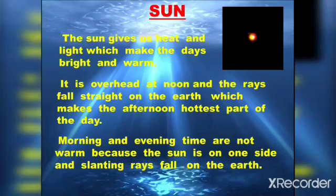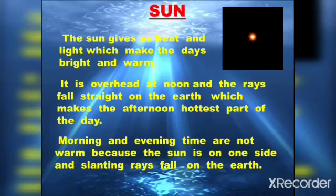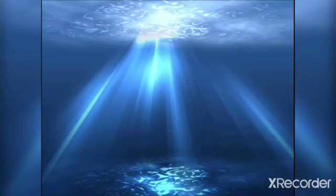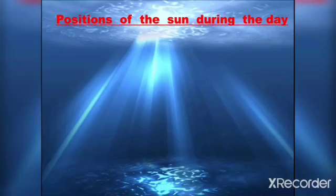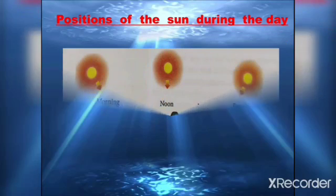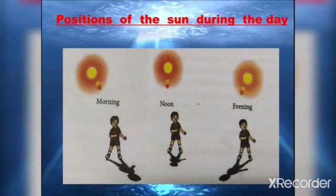Morning and evening times are not as warm because the sun is on one side and slanting rays fall on the earth. In the morning and evening, the sun is on one side and falling slanting rays, but at noon time the sun is overhead and it falls straight rays on the surface of the earth.